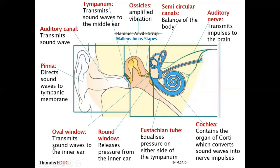The oval window transmits sound vibration from the middle ear to the inner ear. So basically this is what you need to know about the ear and its functions. Please know each part and its function. For example, how is the outer ear adapted to its function of collecting and bringing information to the inner ear? Just look at one part and then talk about its function.